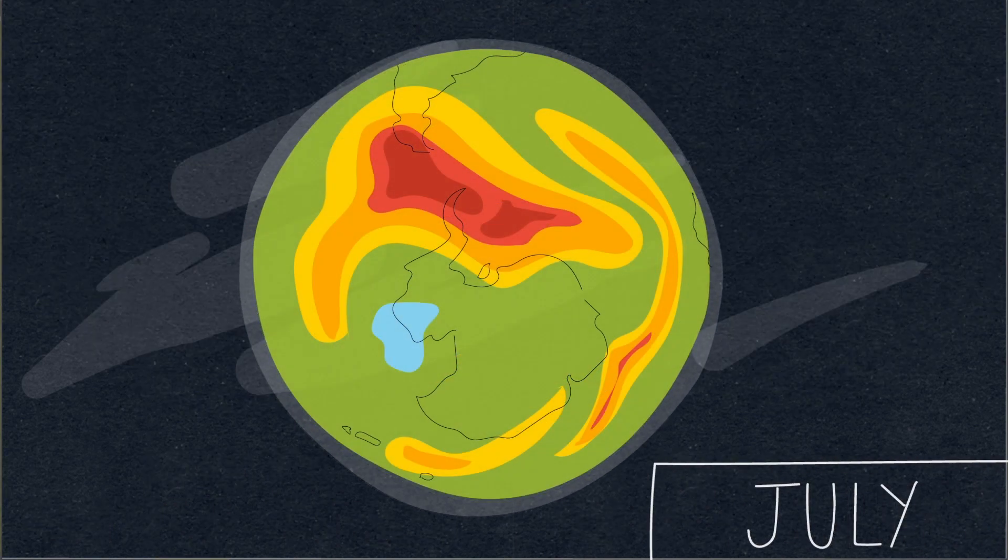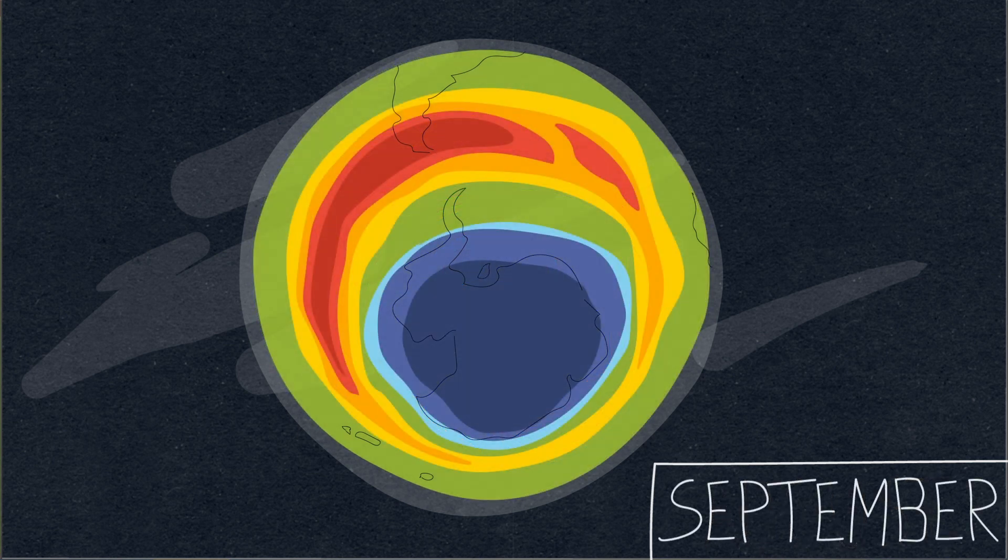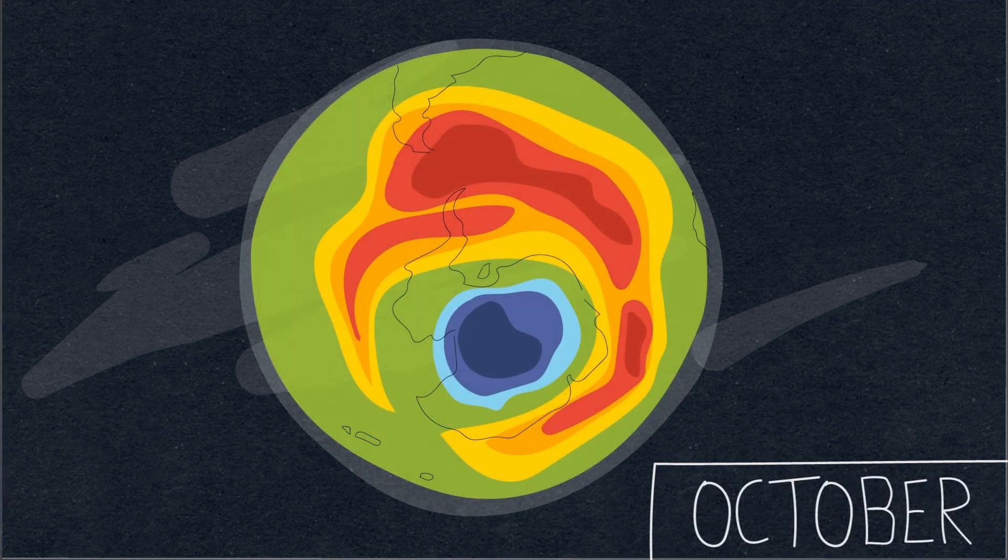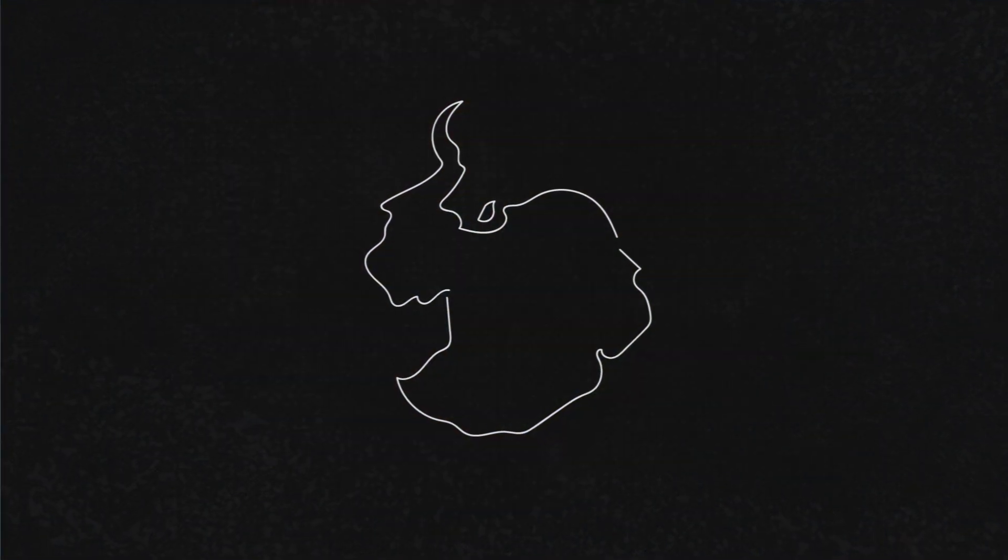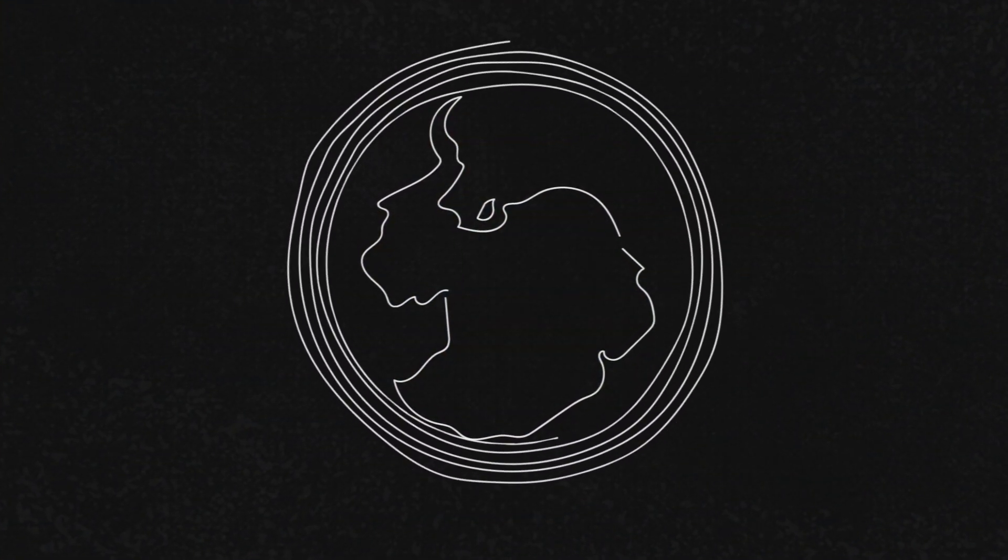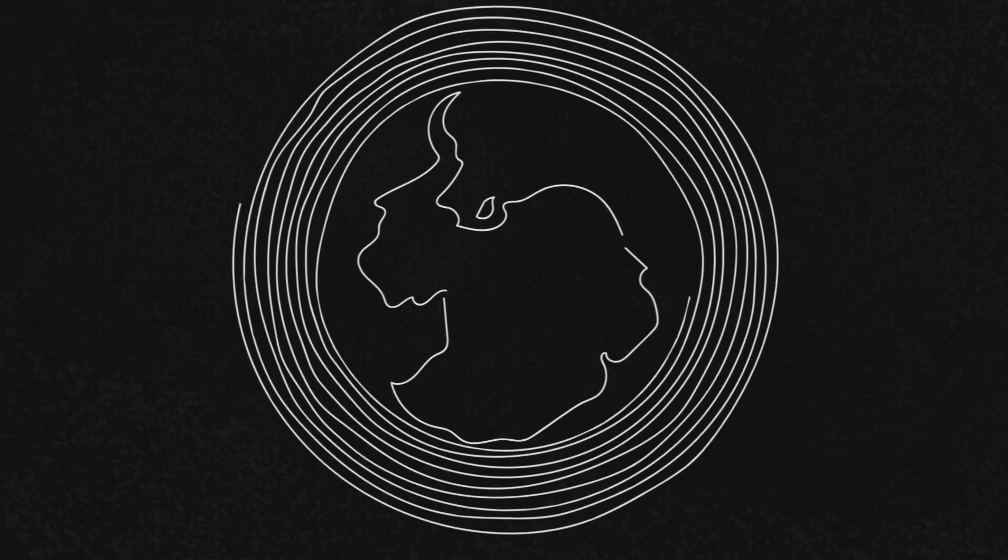However, each year in September the Antarctic sees a resurgence of the ozone hole. This happens because during winter the entire polar region is in darkness and a powerful wind pattern called vortex develops.